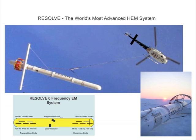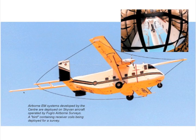Here's the Resolve system in the air. It's got a laser altimeter built into it as well. There are two times six coils — just one vertical coil is used for a cross-check — mostly horizontal coils for the greatest depth penetration.